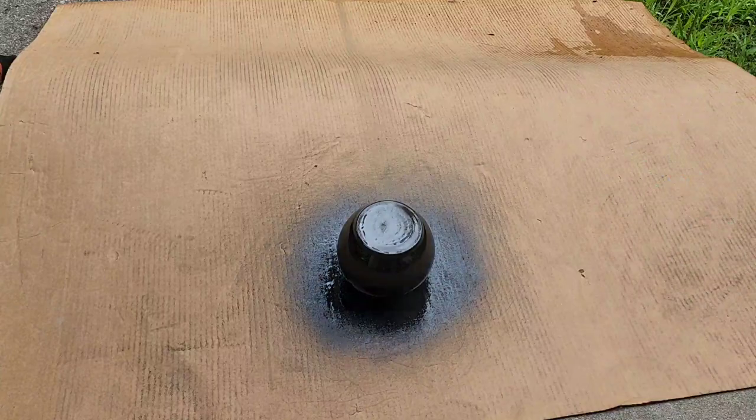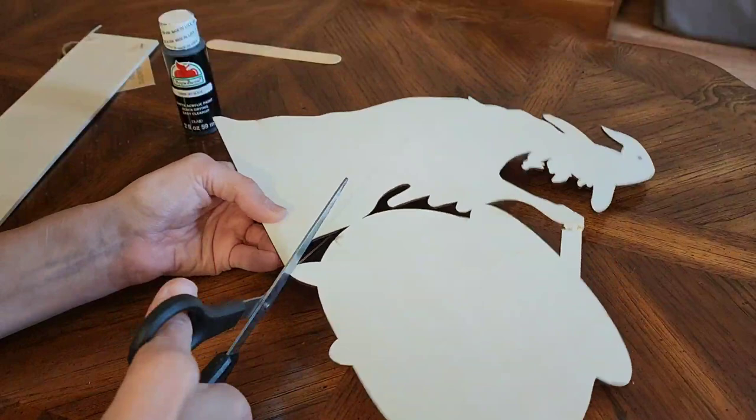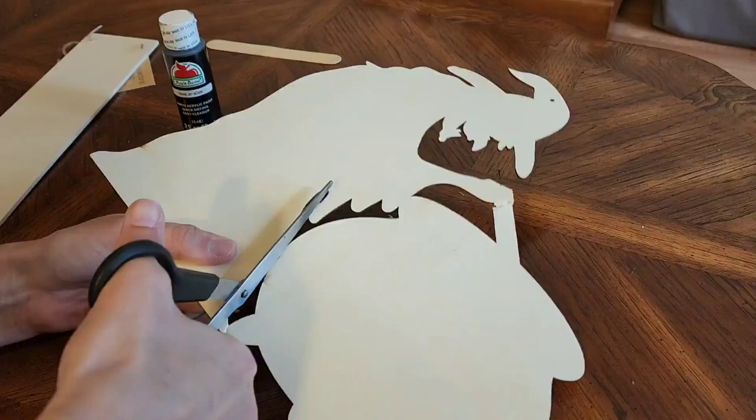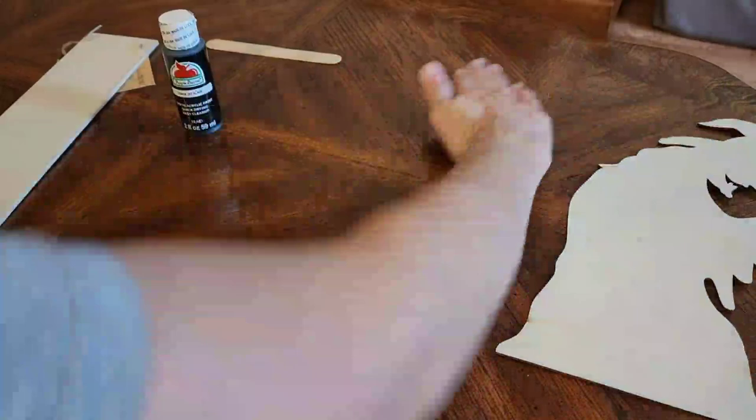I started off by spray painting this glass bubble vase with some black spray paint. And then here I am taking this wooden witch that I got from the Dollar Tree and separating the cauldron from the witch. We don't need this cauldron part and you're going to want to be very careful when you do this.